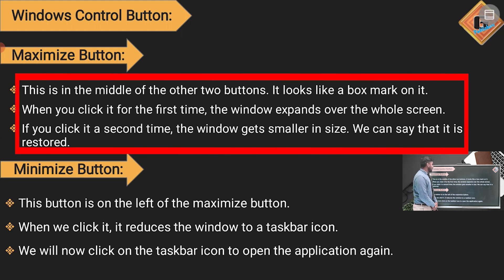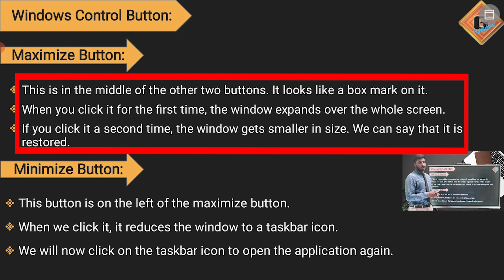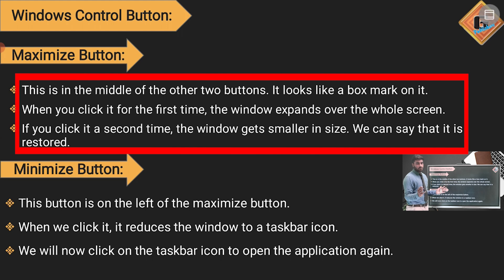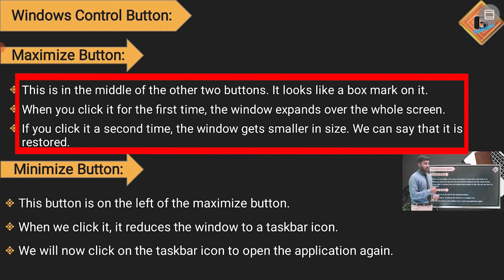The Maximize button is the middle of the three control buttons, and it looks like a box mark. When you click it for the first time, the window expands over the whole screen. When you click it a second time, the window gets smaller — we can say it is restored back to the same size.